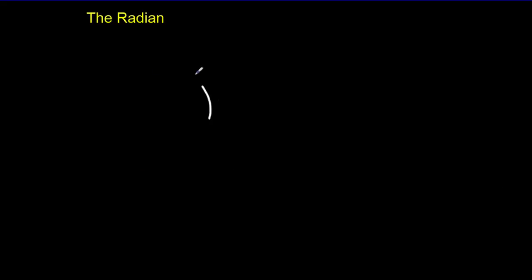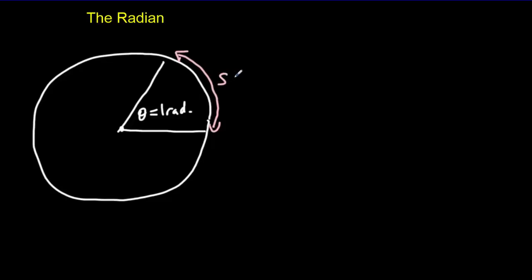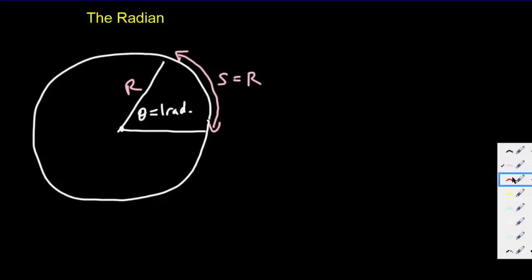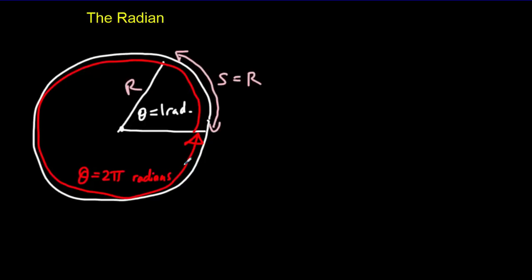We're going to be using radians a lot, so let's briefly review what a radian is. Consider a circle with an angle drawn in it — that angle is one radian only if the arc length is exactly the same size as the radius. What that implies is that an angle going all the way around the circle is 2π radians, simply because there are 2π radii in the circumference of a circle.